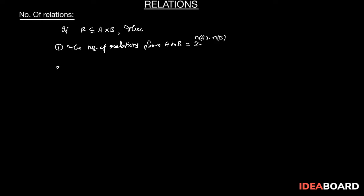Second: the number of relations on A is equal to 2 power n(A) into n(A).